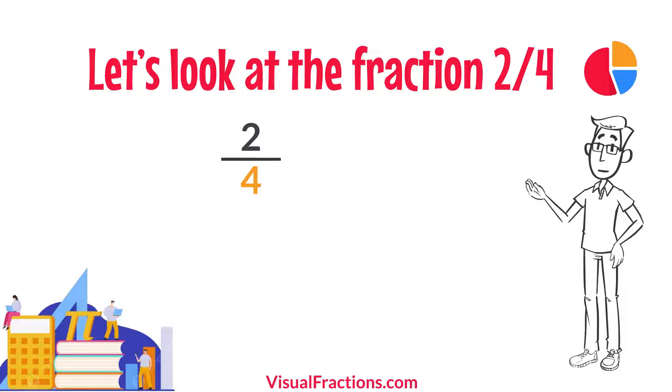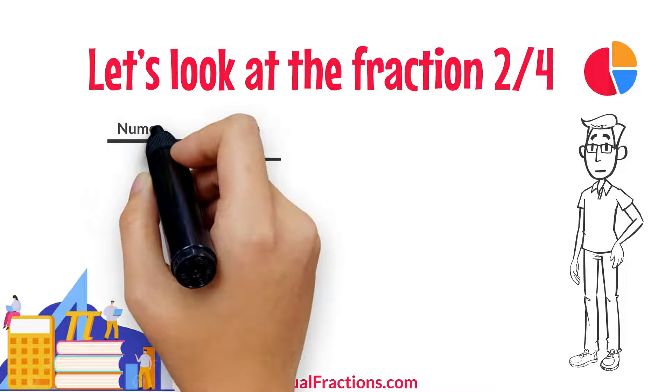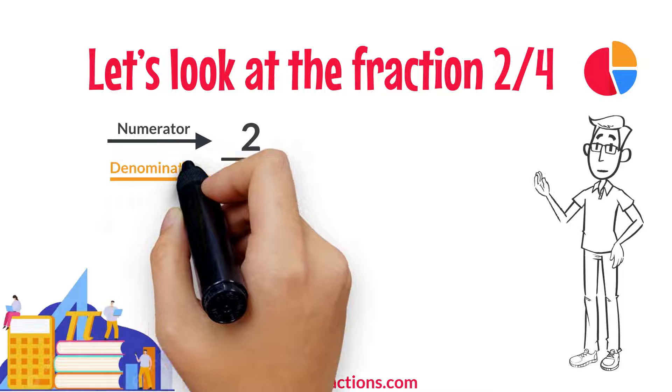Let's look at the fraction two quarters. To simplify it, we'll divide both the numerator and the denominator by their greatest common factor.